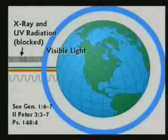Now, if the Bible is right and the Earth had a canopy of water overhead — like the Bible, I think, clearly teaches in 2 Peter 3 and in Genesis 1:6 and 7 — this canopy of water would filter out quite a bit of radiation.